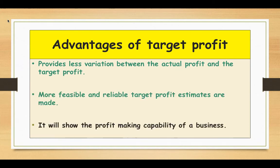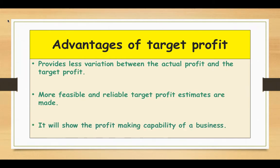The next point: it will show the profit making capability of a business, because this provides a detailed analysis of the fixed cost and variable cost structure of a business. In addition, the incorporation of the selling price and costs will help to evaluate the gross profit margin percentage and the net profit margin percentage, helping in the overall evaluation of the profit making capability of the business.